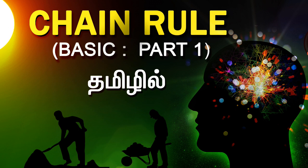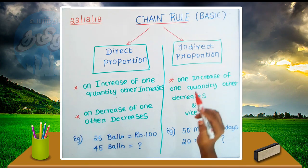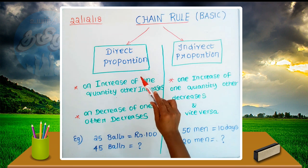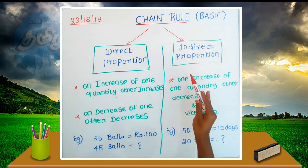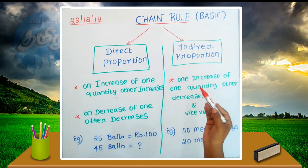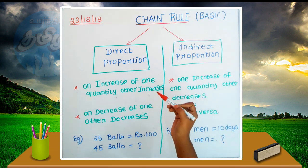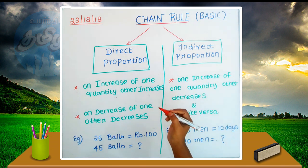Now, chain rule is complete. One is direct proportion, and one is indirect proportion.